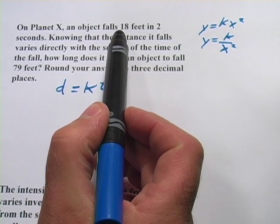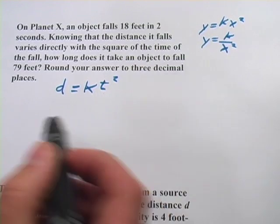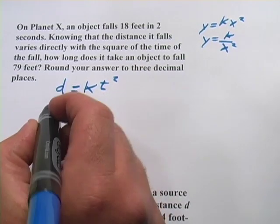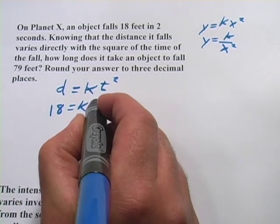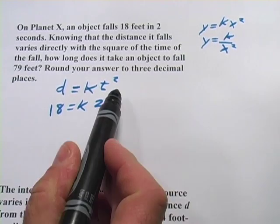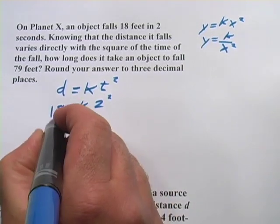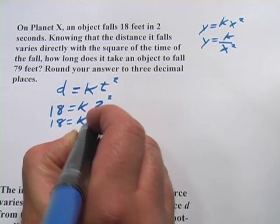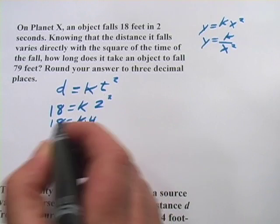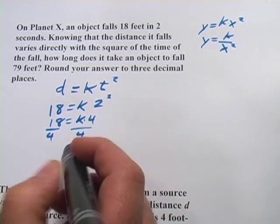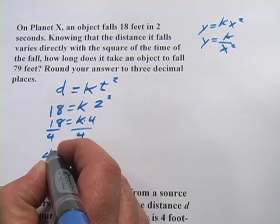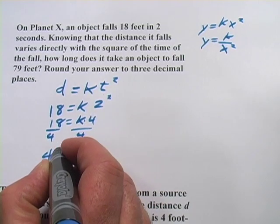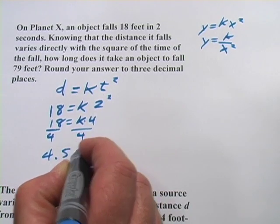And then they tell us an object falls 18 feet in 2 seconds. So we're going to plug those in and solve for k. So the distance is 18 feet, and the time is 2 seconds, but that'll be 2 squared. So that's 18 equals k times 4. We'll divide by 4. And we get 9 halves, 4 and a half. Let's use decimals here. So k equals 4.5.